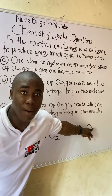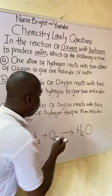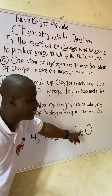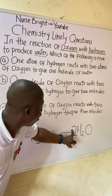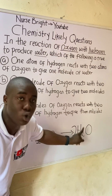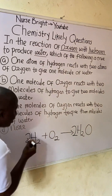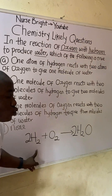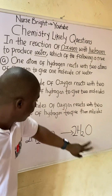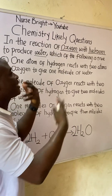Oxygen on the left has two atoms (O₂), but in water on the right we only have one atom of oxygen — so oxygen is not balanced. To balance oxygen, we place a coefficient of 2 in front of water. This gives two oxygen atoms on the right, but now hydrogen becomes 2×2 = 4 atoms. To balance hydrogen, we place a 2 in front of H₂, giving 2×2 = 4 atoms on the left. Now: 4 H on each side, 2 O on each side — the equation is balanced.